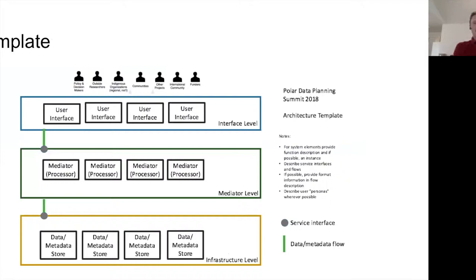Participants were given a template, and the aim was to ask them as field experts to fill it in. Looking at the bottom level, we tried to identify either data or metadata stores — catalogs or data resources. Are there particular tools or middleware in the middle, so things actually processing data? And then particular user interfaces — portals where people will actually get access to the data, identifying particular user types at various infrastructure levels.